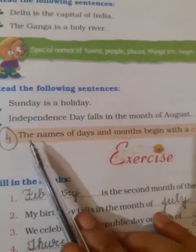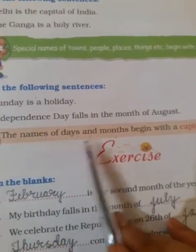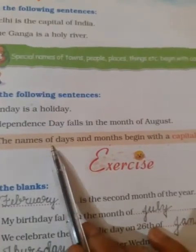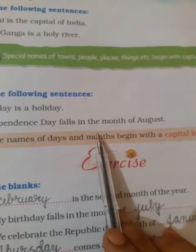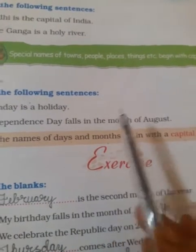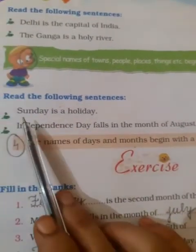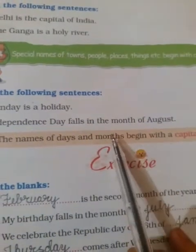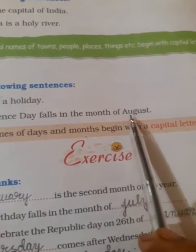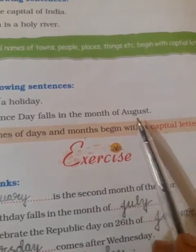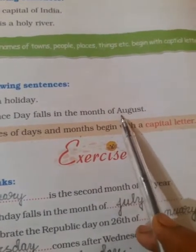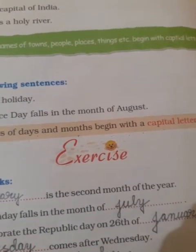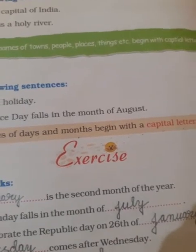The 4th point: the names of days and months begin with a capital letter. The names of days and months always begin with a capital letter. As Monday, or Sunday — capital letter. And months: August, May — the first letter will always be capital. In January, J will be capital. February, F will be capital. And so on.